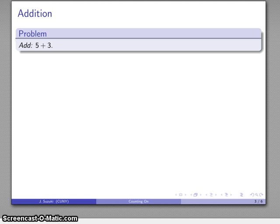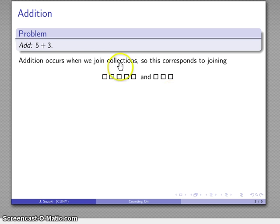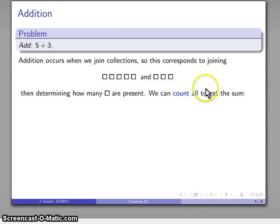Let's try and add 5 plus 3. Addition occurs when we join collections, so this corresponds to joining collections looking something like this. There's our 5, there's our 3, we run them together. Addition corresponds to the cardinality of the joined set. The simplest way we can do that is determine how many of these squares are present in the combined set. The easiest way to do that is to count them all, count every single one of them. We call this a count all strategy.